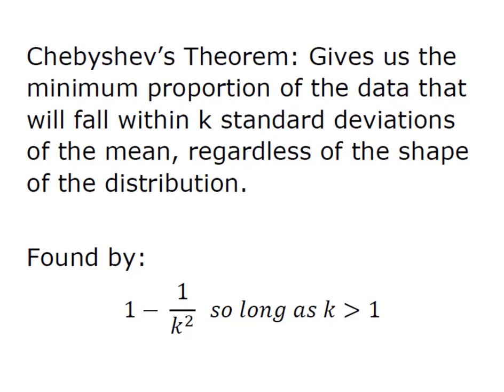So let's just revisit the theorem real quick. Remember, Chebyshev's gives us the minimum proportion of the data that will fall within k standard deviations of the mean, and this is regardless of the shape of the distribution. It's important to remember that k represents the number of standard deviations from the mean.